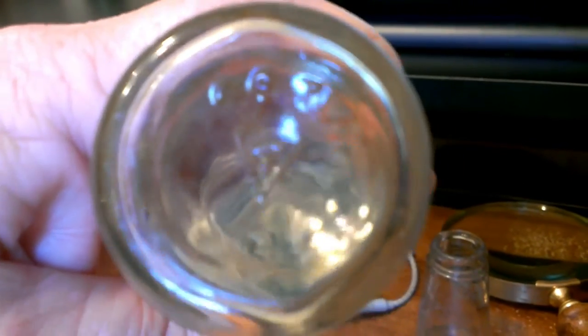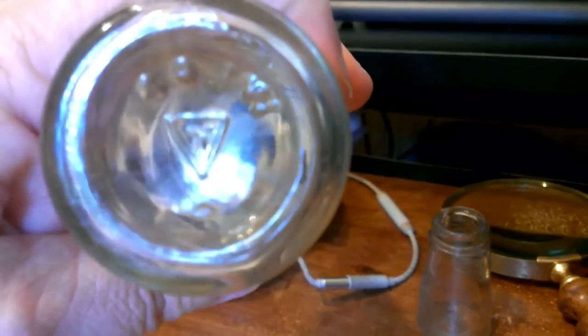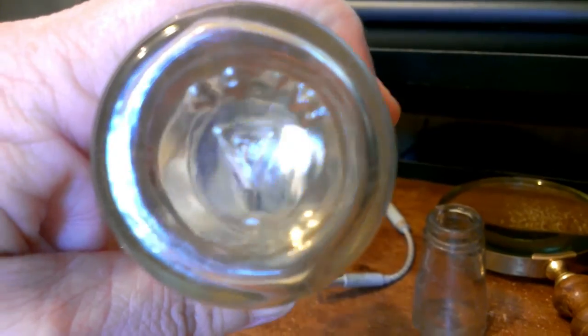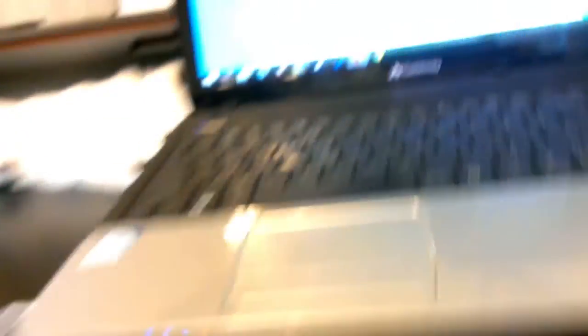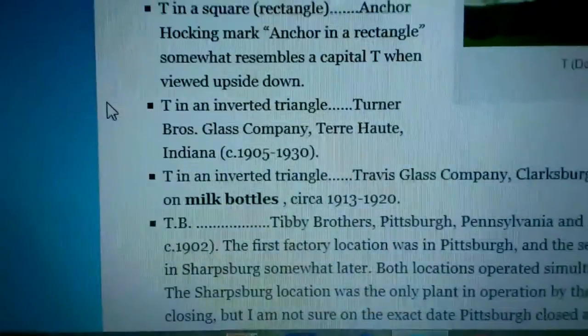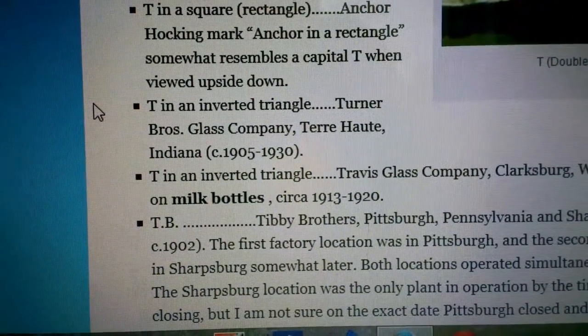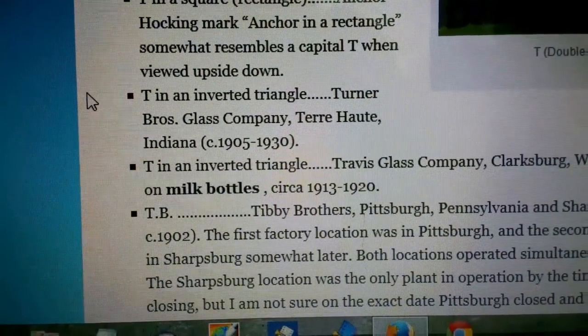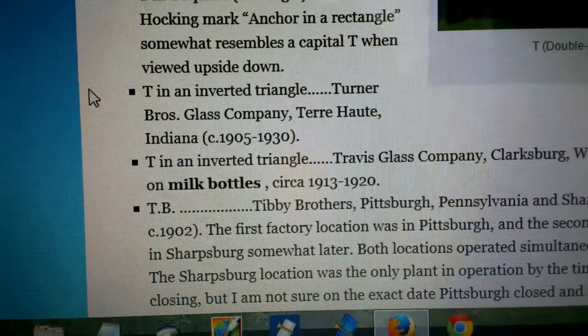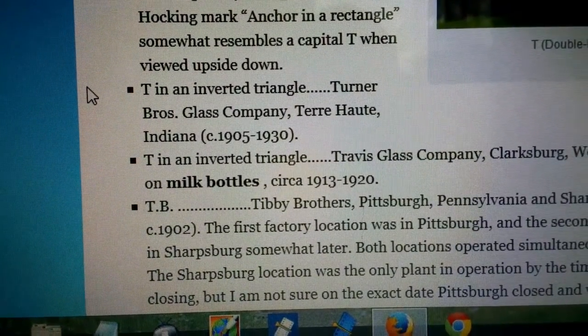Okay, I got a better look at that marking, and it is actually a T in an inverted triangle. So I looked that up. T in an inverted triangle. Turner Brothers Glass Company, Terry Haught, Indiana, 1905 to 1930. So that still pretty much fits with the age of this dump.